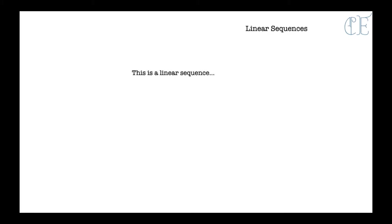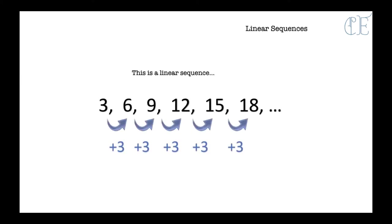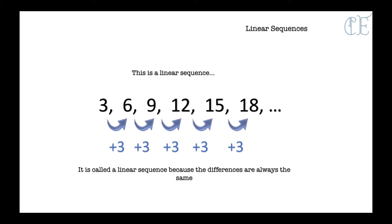So let's start with linear sequences and what they are. A linear sequence is when the differences in the numbers are all the same. So you've gone up in an exact amount: 3, add 3 is 6, add 3 is 9, add 3 is 12, add 3 is 15. So like a times table — that's a linear sequence.